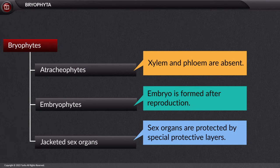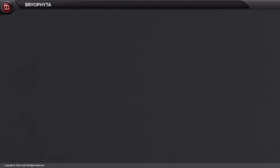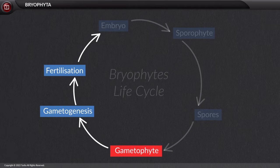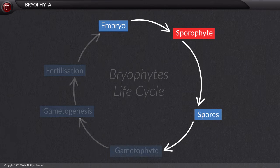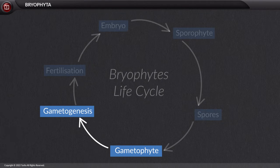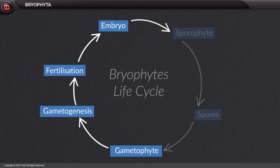The complete life cycle of bryophytes includes two generations: the gametophyte and the sporophyte. The gametophyte is the main plant body that produces gametes. The gametes fuse or fertilize to form a sporophyte.